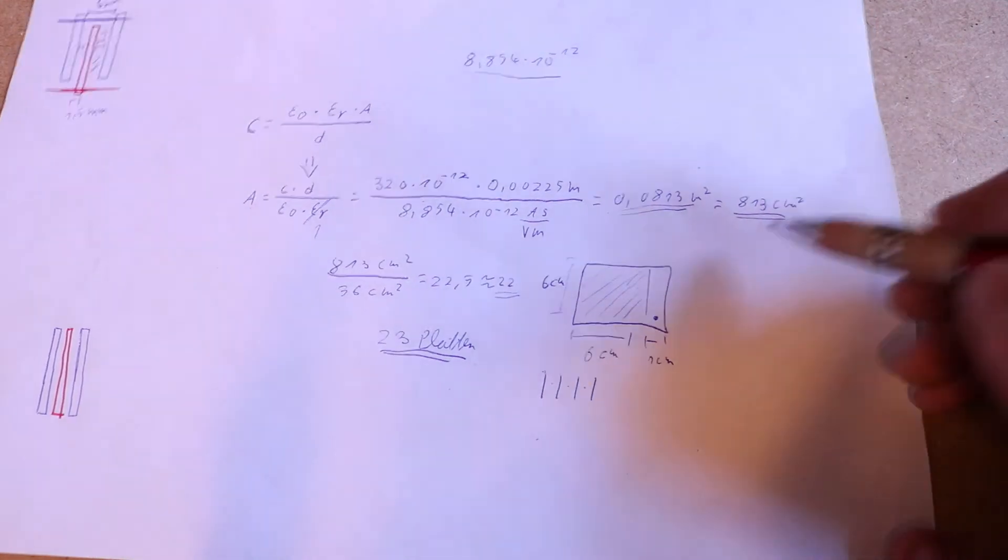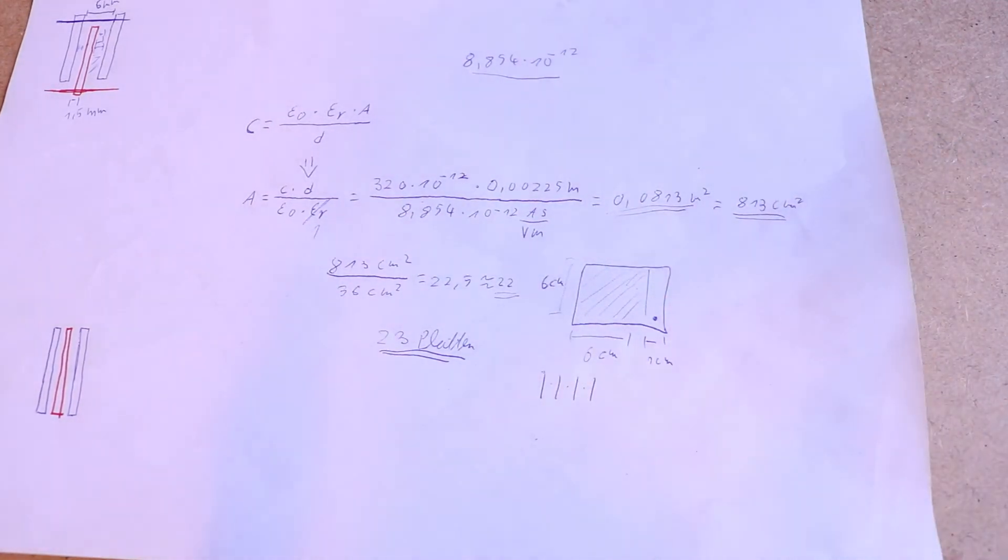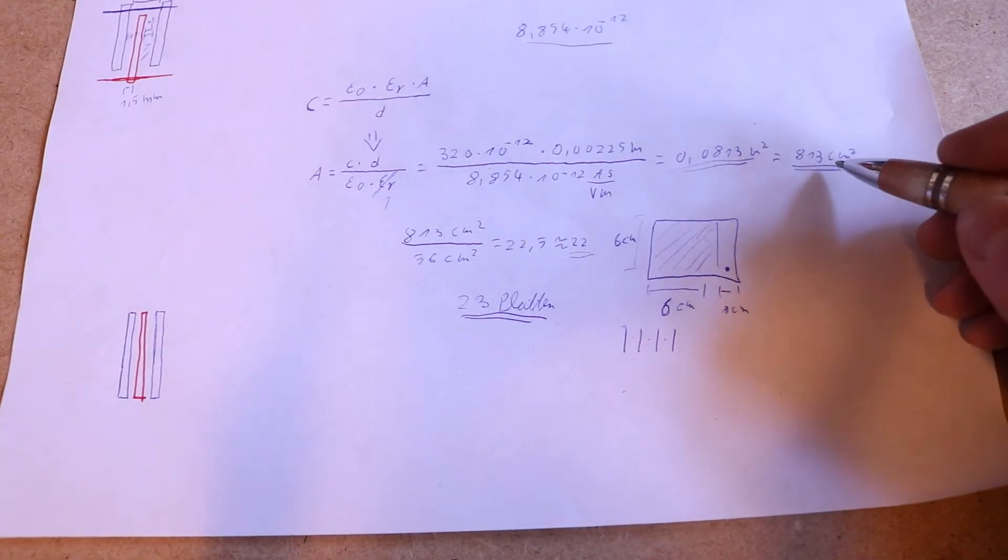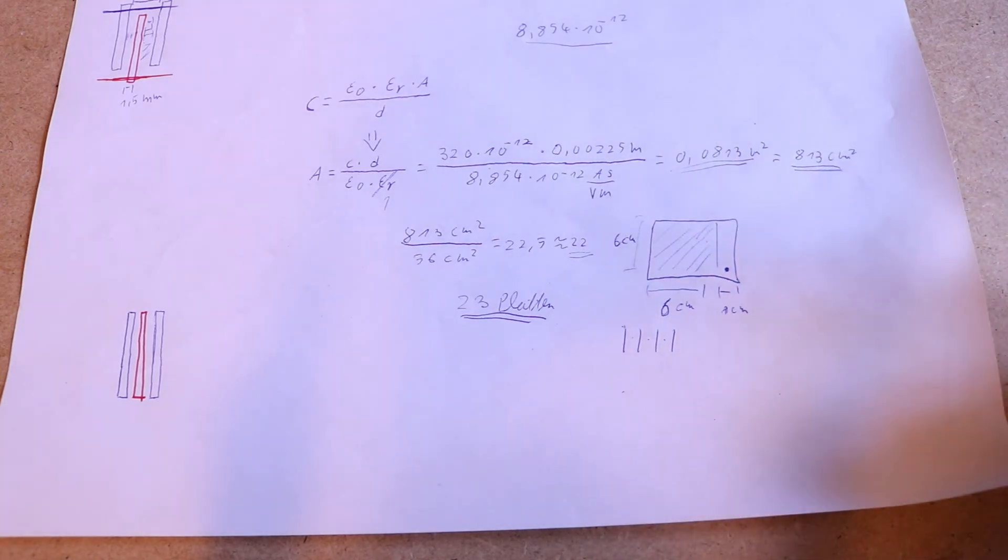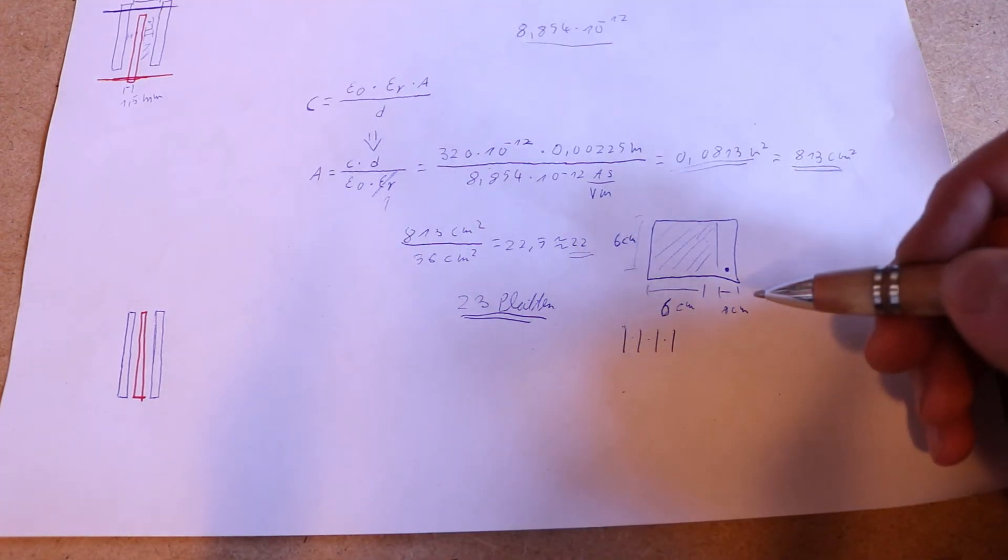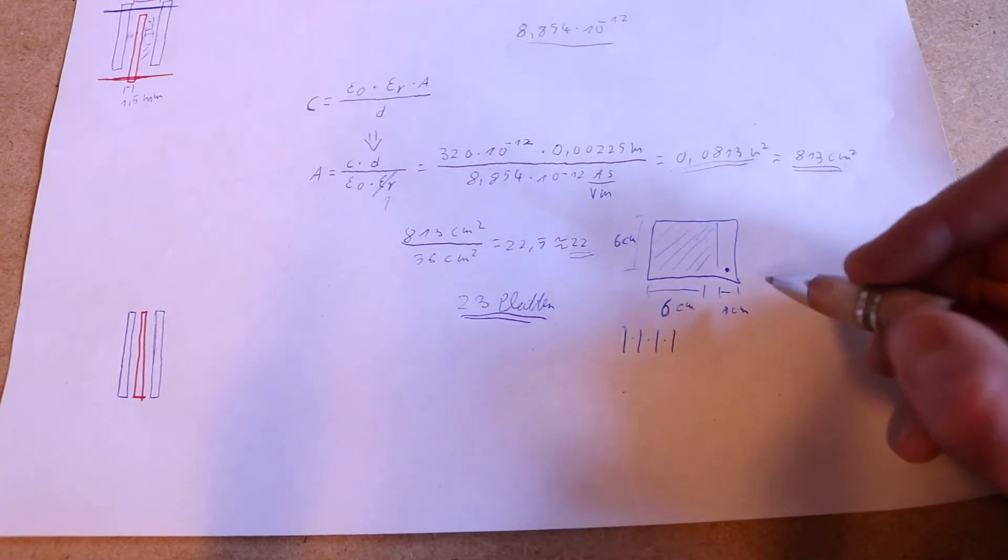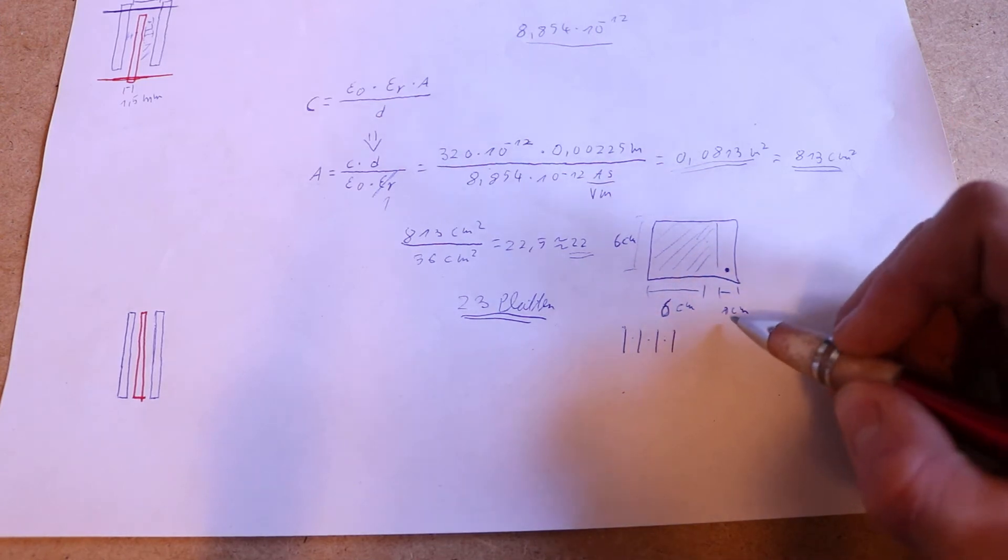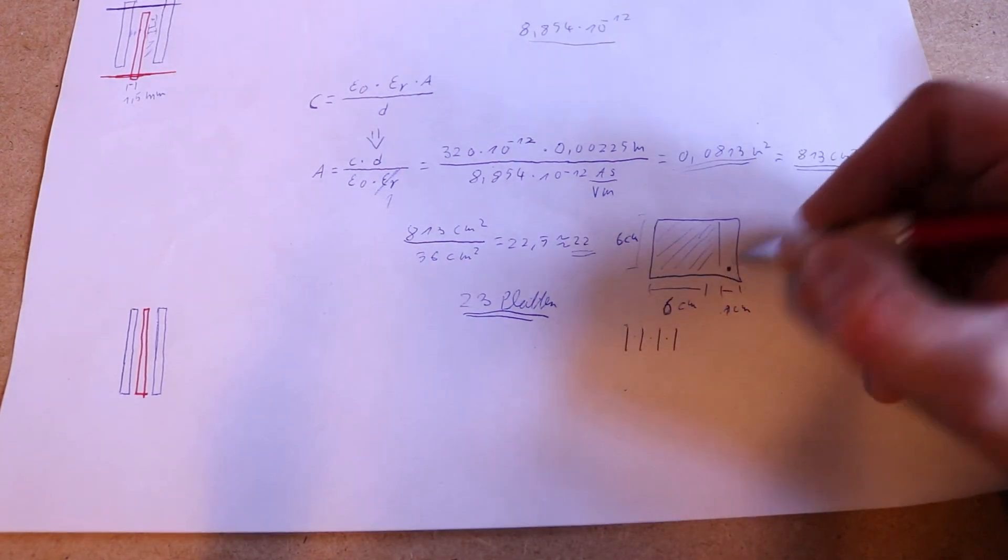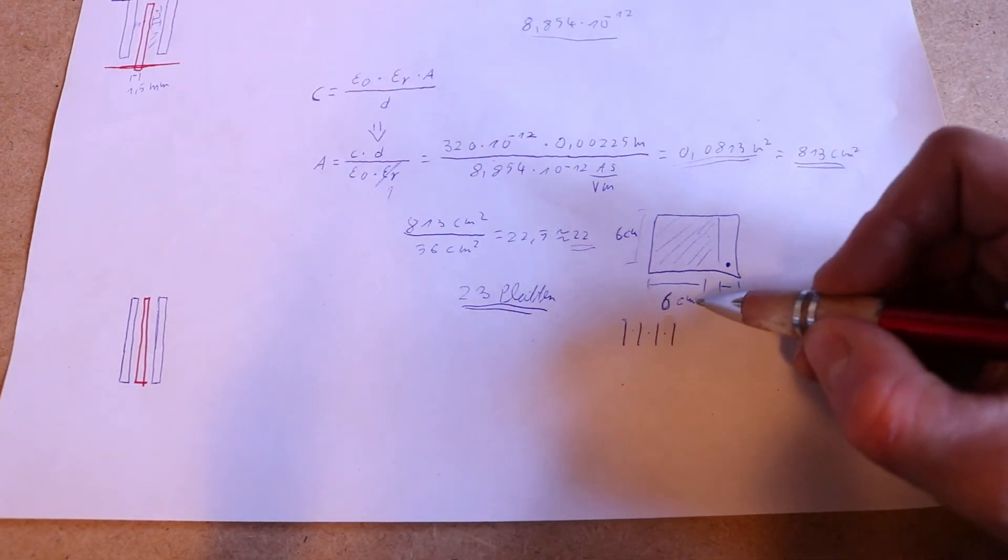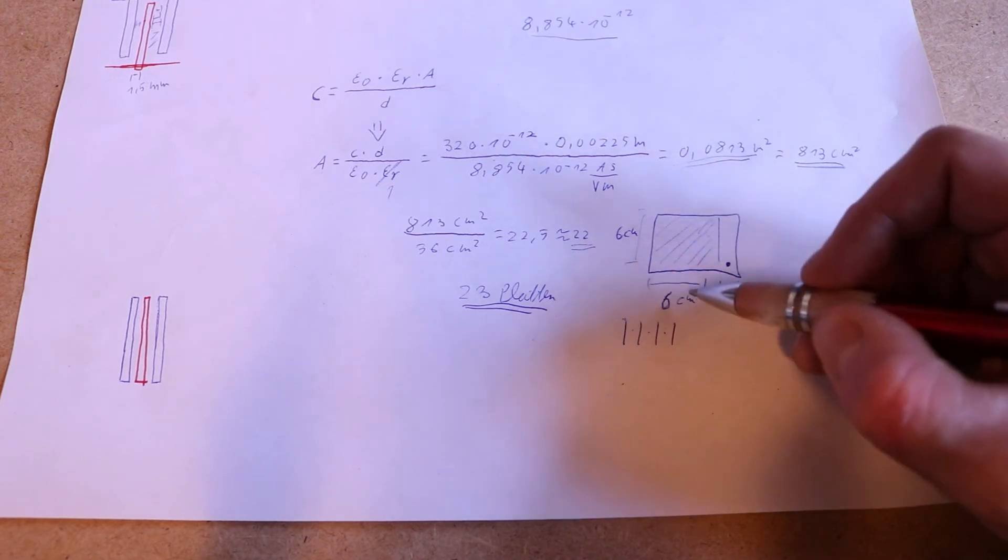If we have two plates that are 813 centimeters squared, we would be ready, but then the capacitor would be pretty huge. To make it smaller, I use smaller plates in parallel. The size of the plates is 1 centimeter here for the rod to hold the plates, and the rest is 6 by 6 centimeters, which is 36 centimeters squared.